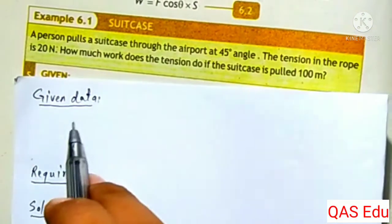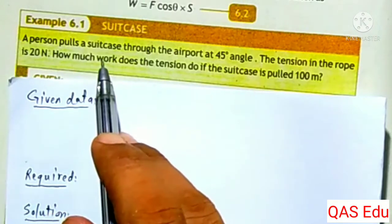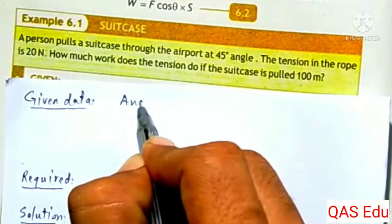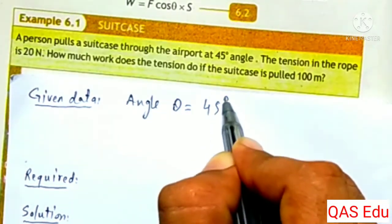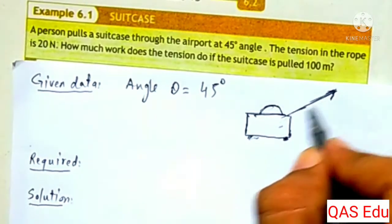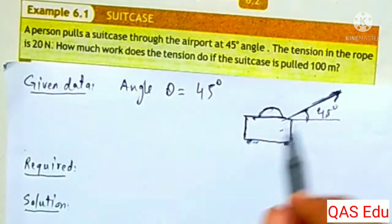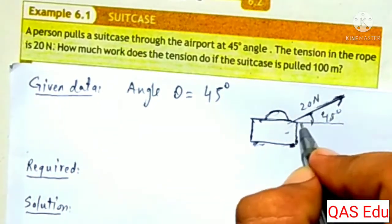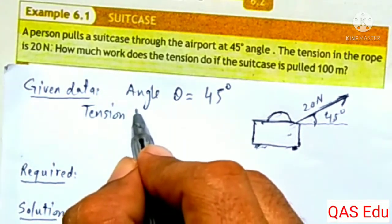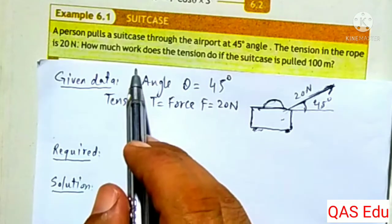In the name of Allah. This is our last physics example 6.1. A person pulls a suitcase through the airport at a 45 degree angle. The tension in the rope is 20 newtons. The suitcase makes a 45 degree angle with the horizontal. The tension equals the force, so Force F is equal to 20 newtons. How much work does the tension do?